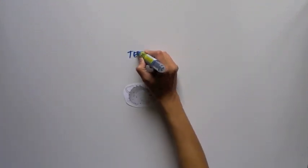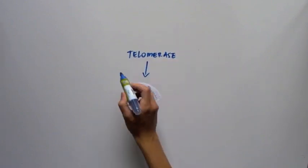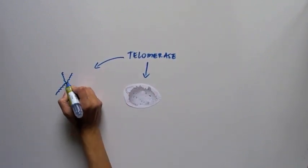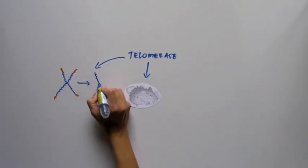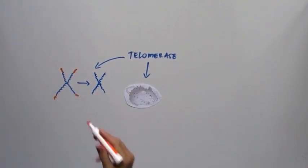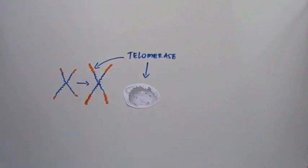This is exactly what this group at the Spanish National Cancer Center has done. What they did exactly is they took adult and old mice and added more of a protein called telomerase. This protein is known to extend chromosomes, and they hypothesized that adding back more telomerase in old mice could delay aging.